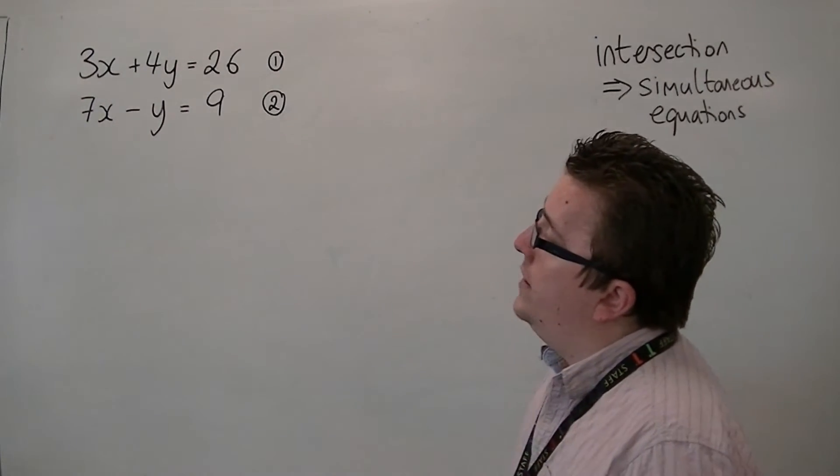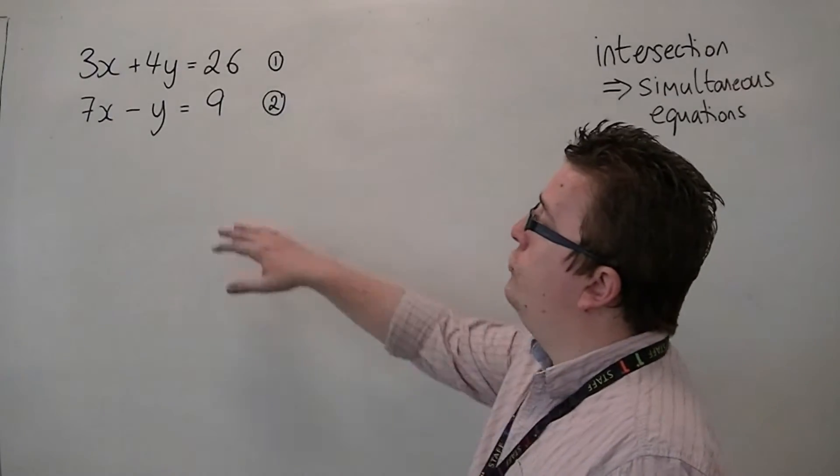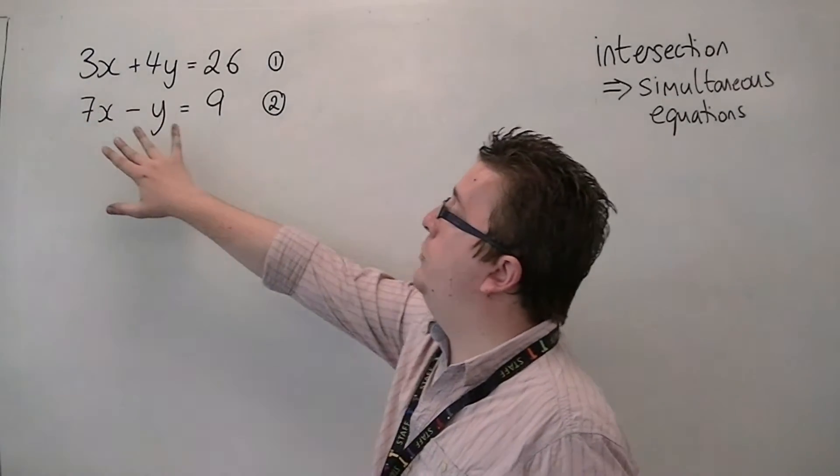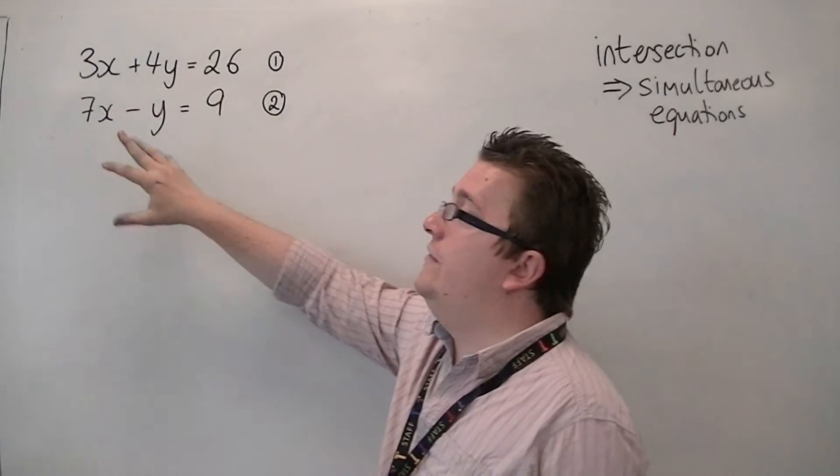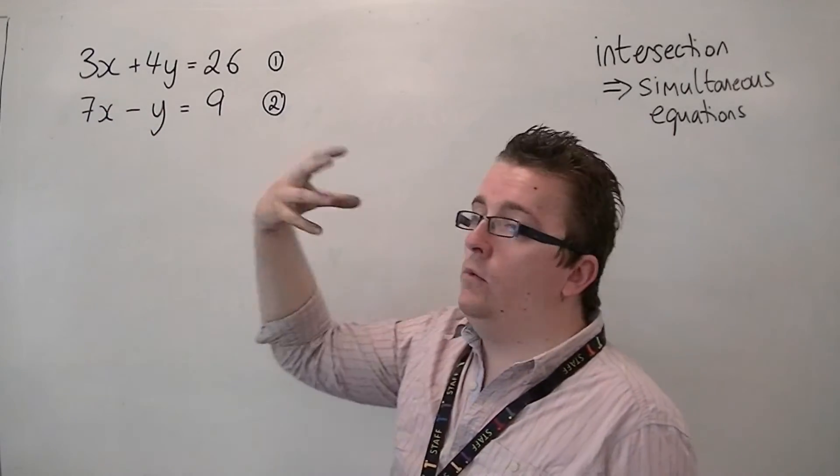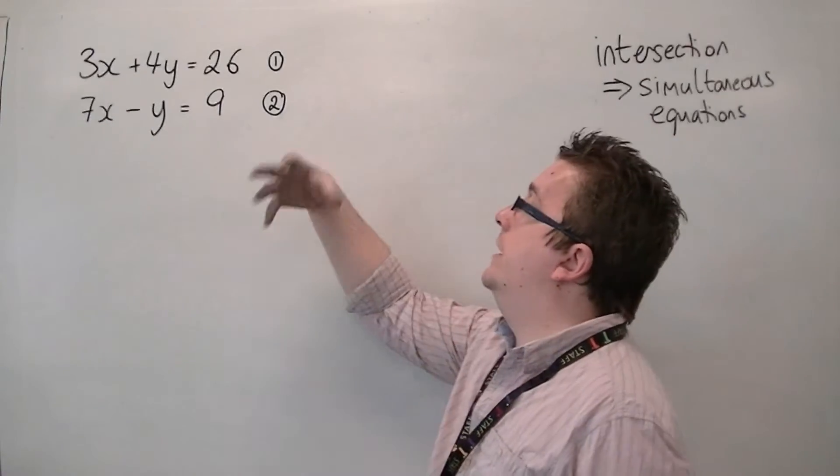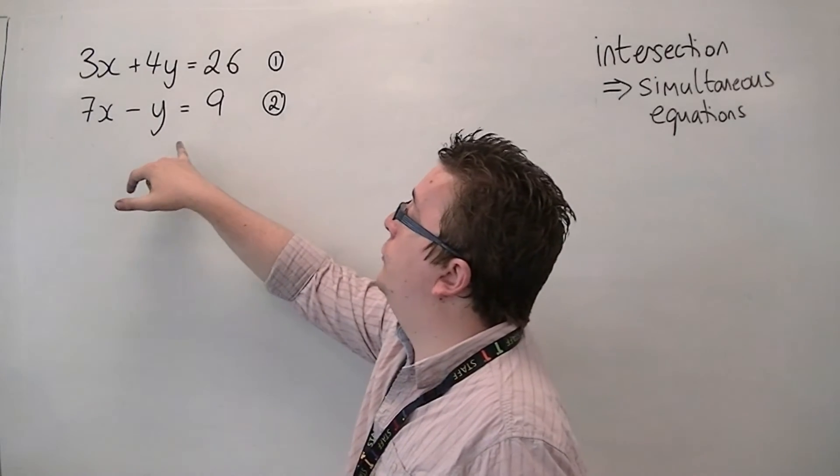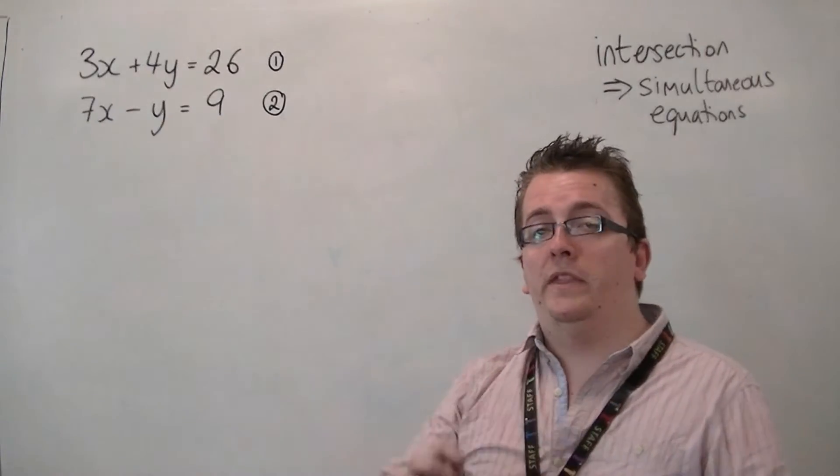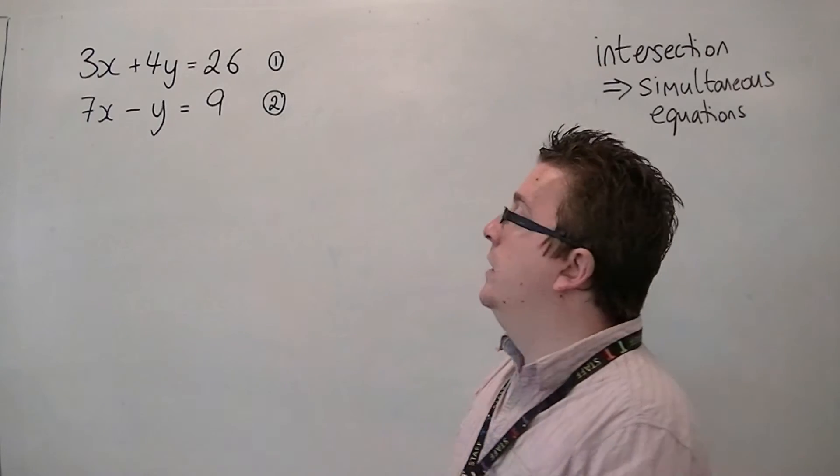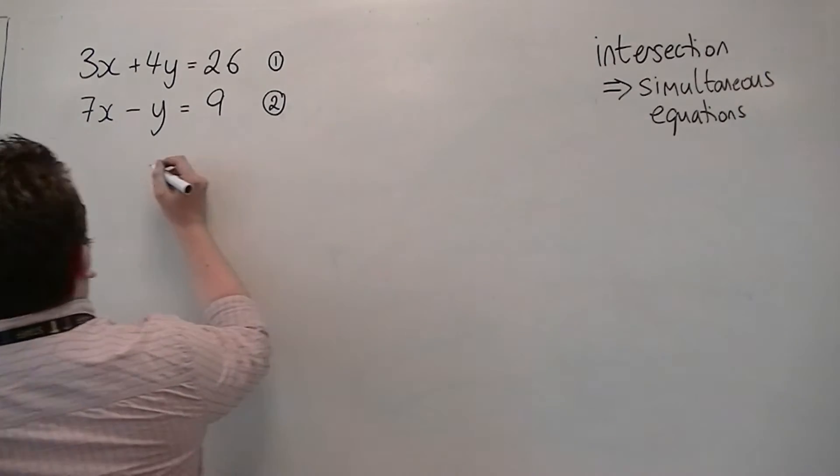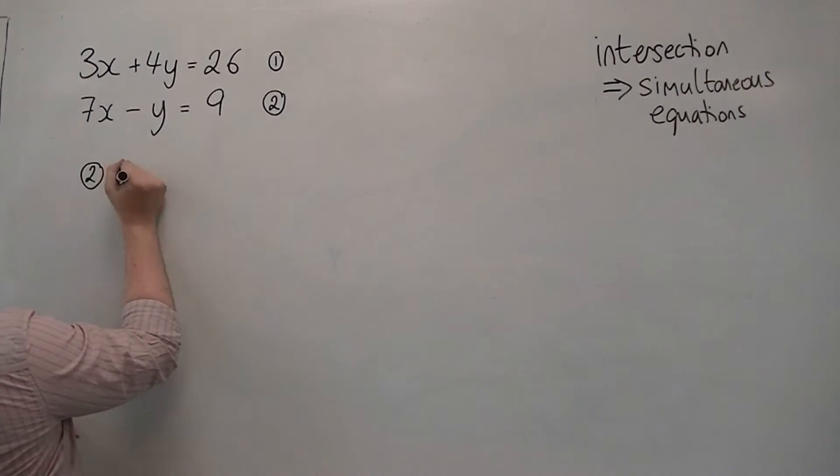Personally, I'd probably be going for the y's here. The reason being is that I could multiply the bottom equation by 4 and then add the two equations. There won't be any subtraction involved. I can add them because I would have minus 4y on the bottom and positive 4y on the top, and so they would cancel each other out when I add them. So that's what I'm going to do. I'm going to multiply equation 2 by 4.